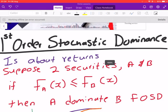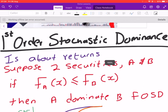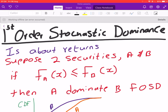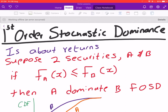For first-order stochastic dominance, we actually look at their returns. If you have two securities or two assets or two portfolios A and B, in such a way that the CDF of A is less than or equals to the CDF of B, then we say that A is first-order stochastically dominant to B.